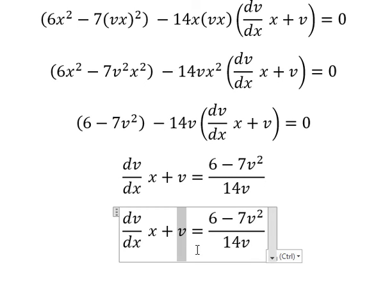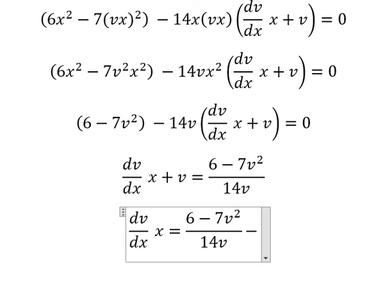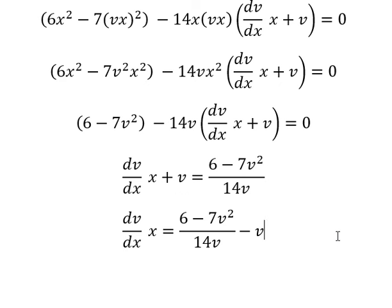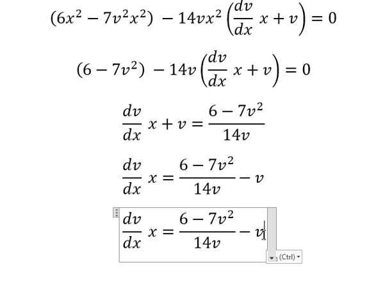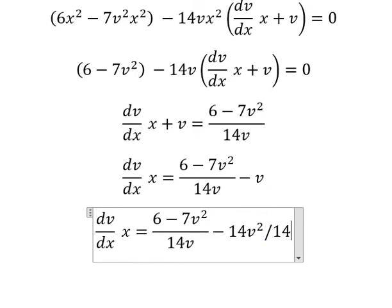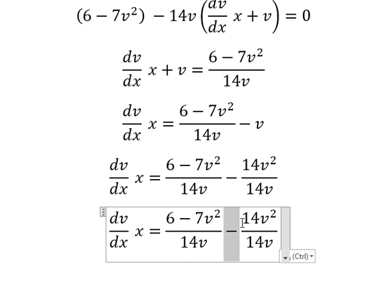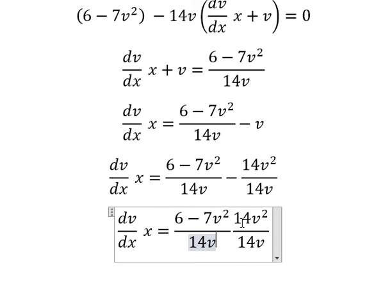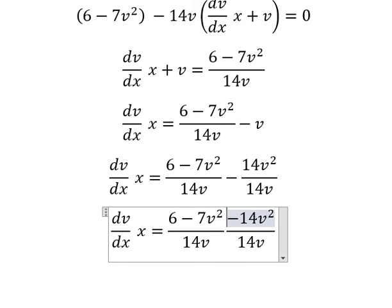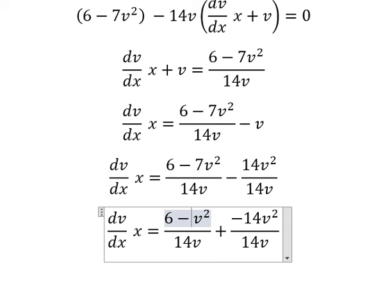Next I will put v to the right. We can write this as 14v squared over 14v, and we need to do a common denominator. So negative 7 and negative 14 gives us negative 21.